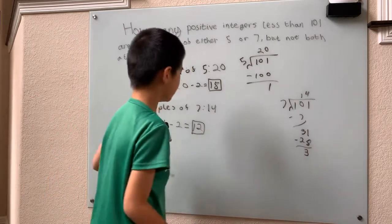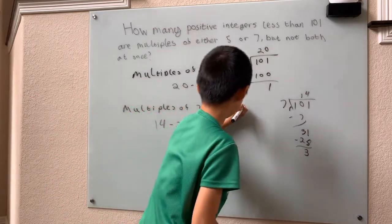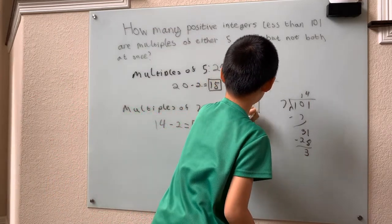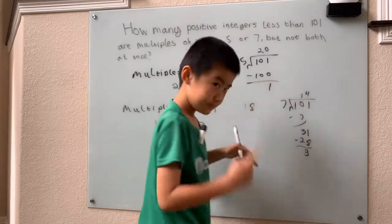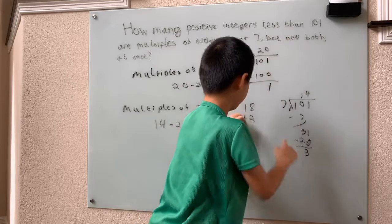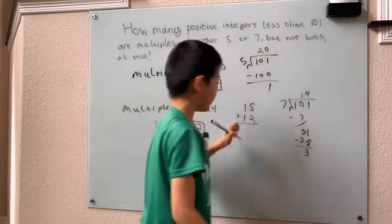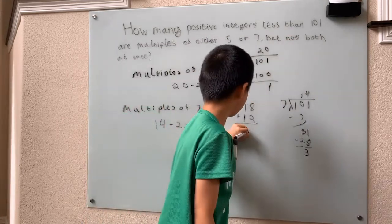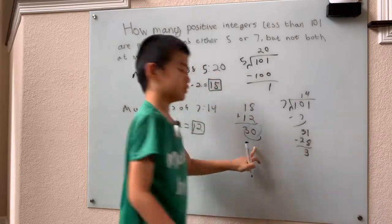And then we see, finally, since we didn't count anything more than once, and we did that 'but not both' thing, we can just add these two, and when we do add those, we got 30.